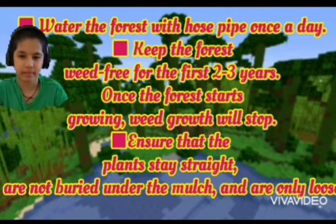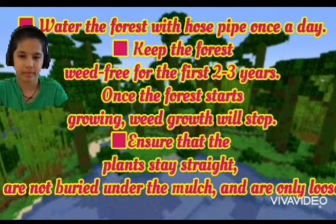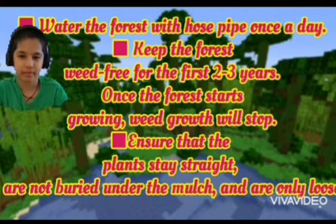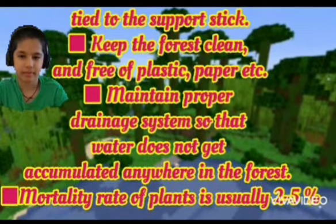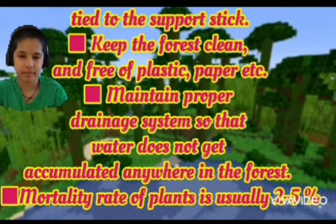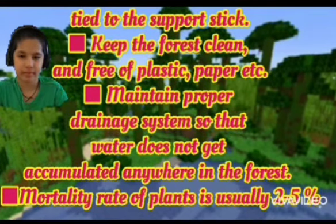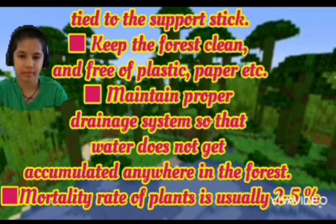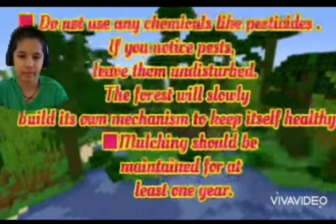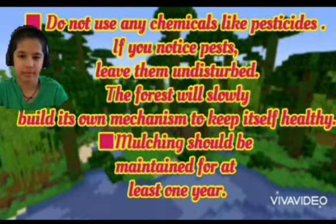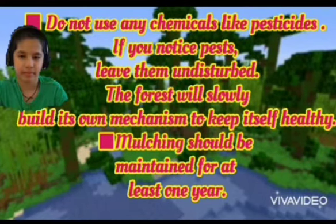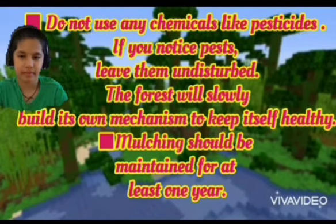Ensure that plants stay straight and are not buried under the mulch — they should be only loosely tied to the support stick. Keep the forest clean and free of plastic, paper, etc. Maintain proper drainage systems so that water does not accumulate anywhere in the forest. The mortality rate of plants is usually 2-5%. Do not use any chemicals like pesticides. If you notice pests, leave them undisturbed — the forest will slowly build its own mechanism to keep itself healthy.